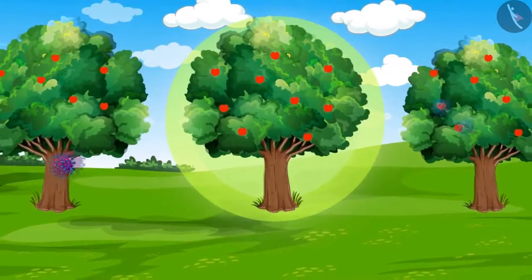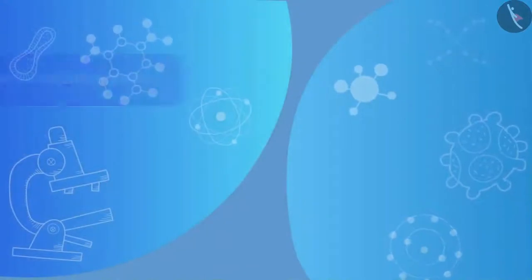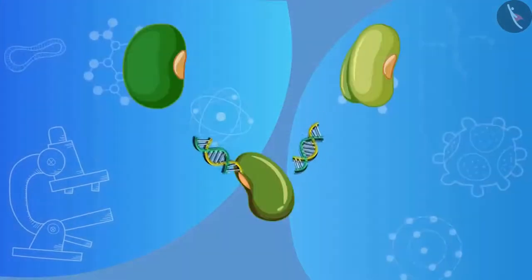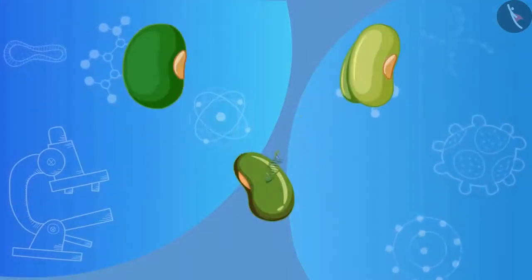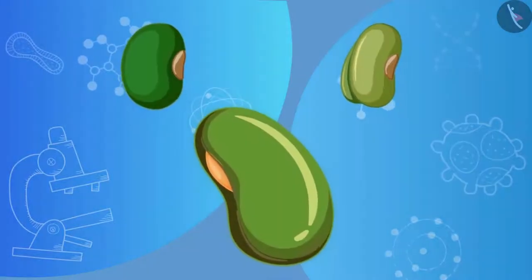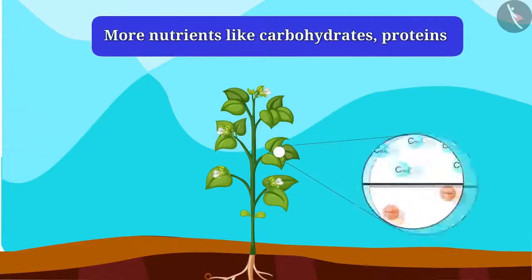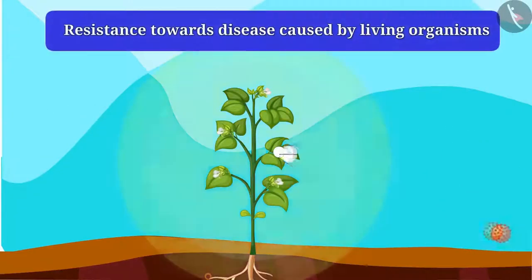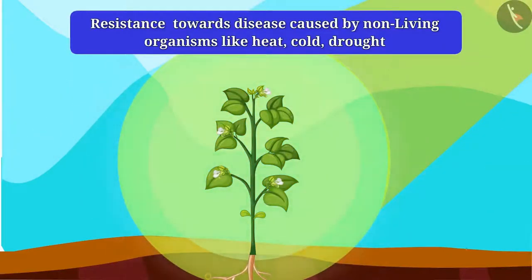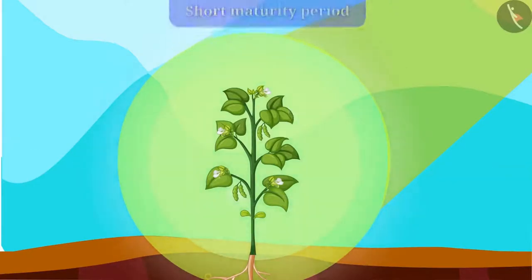Do you know the other ways by which crops can be improved? The crops can also be improved by the use of good and healthy seeds and by using genetically modified seeds. So friends, by hybridization and by genetic modification, we can make better seeds. But what should be the properties of a good seed? Properties such as high yield, having more nutrients like carbohydrates, proteins, resistance towards disease caused by living organisms, resistance towards disease caused by non-living organisms like heat, cold, drought, and short maturity period — all these qualities should be in a good seed.